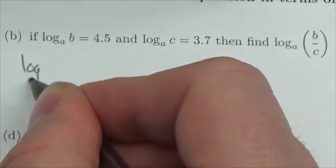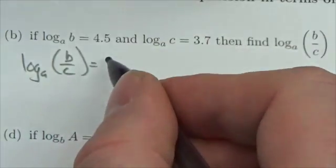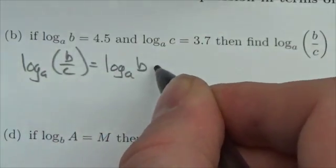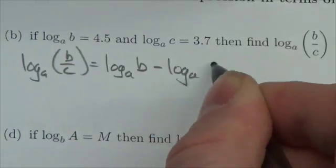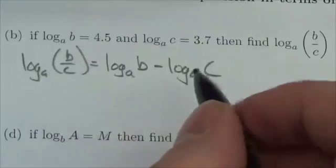So the log base A of B over C, if I try to expand that out as far as I can, this becomes the log base A of B minus the log base A of C. Division within a log becomes subtraction between logs.